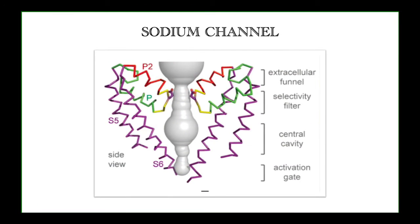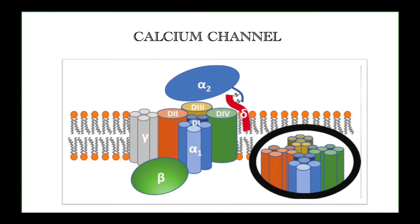The sodium channel is a funnel-shaped channel with an extracellular funnel on the outside, an intermediate filter, a central cavity, and an activation gate. Two P1 and P2 alpha helices act as a selective filter, allowing selective movement of sodium ions into the vestibule, which is interconnected from outside to inside the cell. The calcium channel, already discussed, is formed of alpha-1, beta, alpha-2, gamma, and delta subunits, where gamma and delta are side chains. The central core is formed by alpha-1 containing D1, D2, D3, and D4 subunits, allowing the movement of calcium ions.